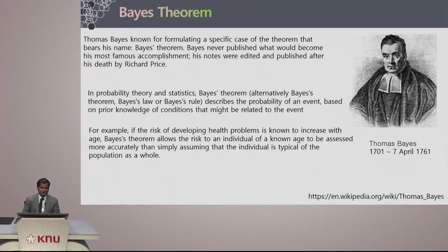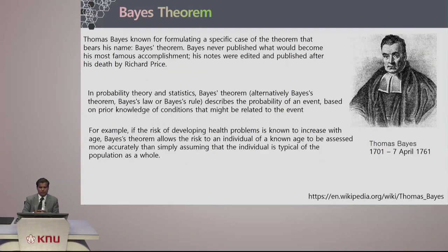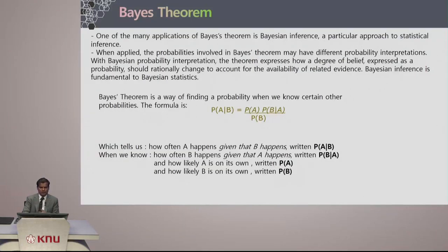Here is an example: if the risk of developing a health problem is known to increase with age, Bayes' theorem allows the risk for an individual of known age to be assessed more accurately than simply assuming the individual is typical of the population as a whole. He is considering other factors that would affect this particular event.